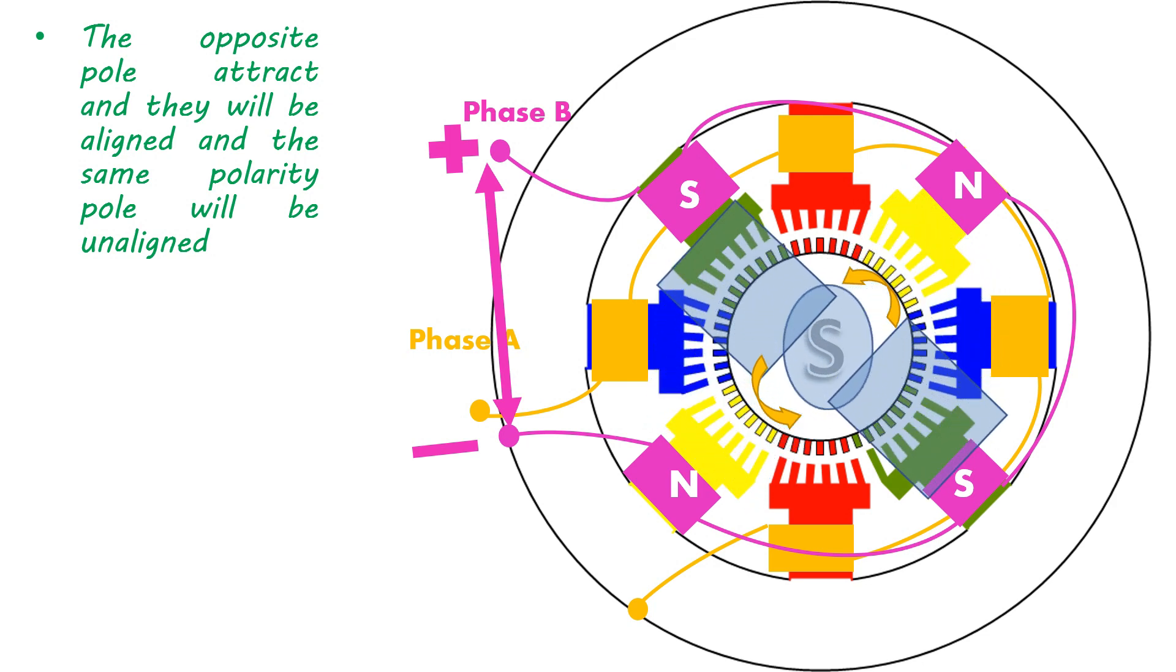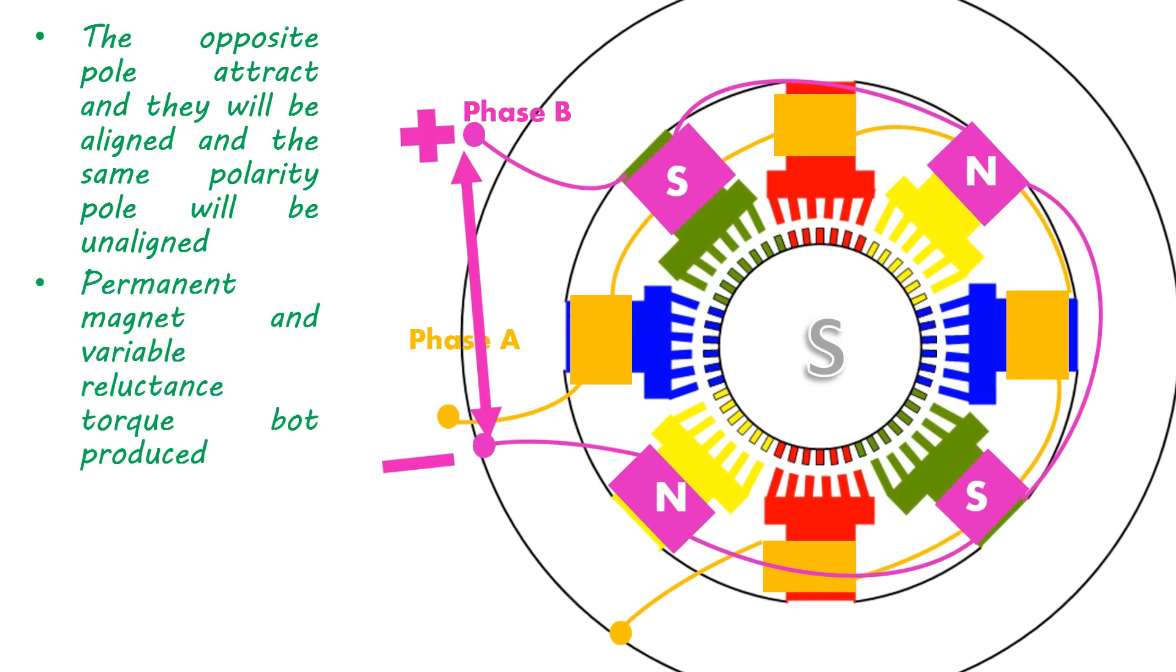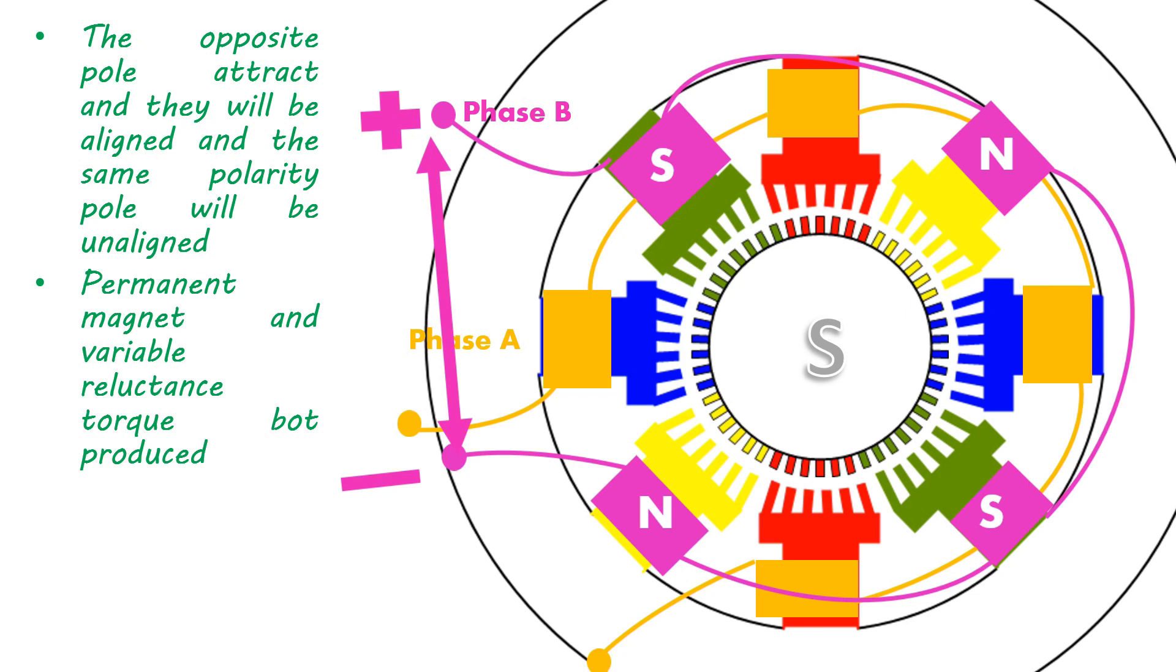At the same time, green group of stator phases with S pole tries to unalign due to repulsive force of rotor S pole. Not only this permanent magnet torque, reluctance torque is also acting on the rotor to attain minimum reluctance position for yellow teeth and maximum reluctance for green groups of stator teeth. So here two types of forces will act and makes the rotor rotate in anti-clockwise direction by an angle of 1.8 degrees. Thus rotation ensures that the yellow teeth are fully aligned and green groups are unaligned.